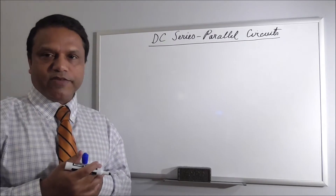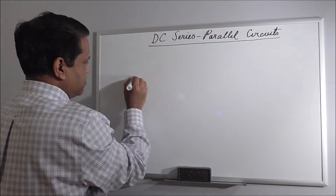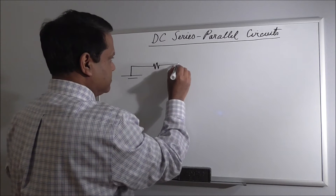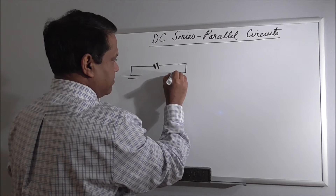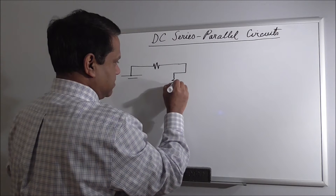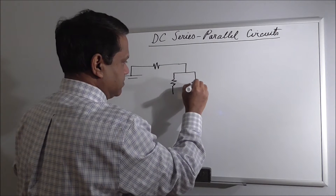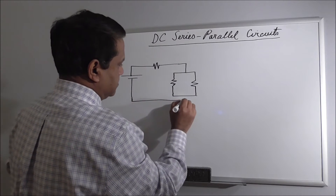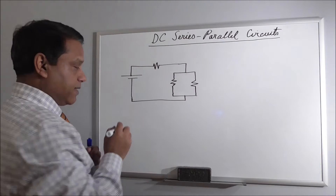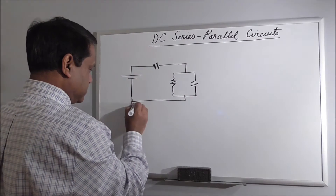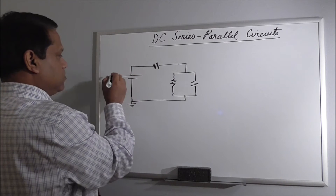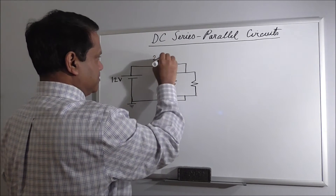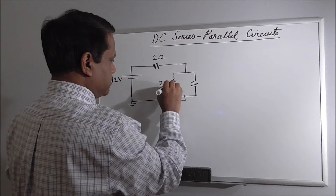Let's begin with a very simple circuit. We have a voltage source, one resistor, and two resistors. Let's add a ground node. Assume the source is 12 volts, and both resistors are 2 ohms each.